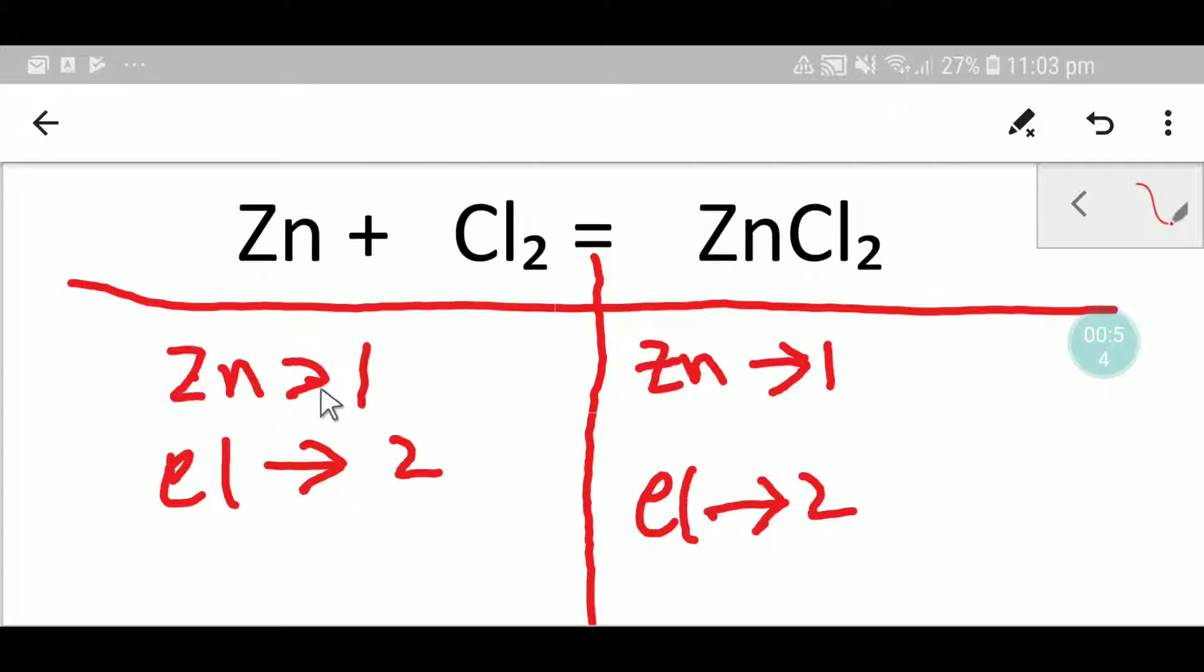To balance this equation, what we have to do is balance the number of zinc and chlorine from both sides. In the left hand side we have one zinc, in the right hand side we have one zinc, so zinc is already balanced. In case of chlorine, we have two chlorine here and here we have two chlorine. Chlorine is balanced.